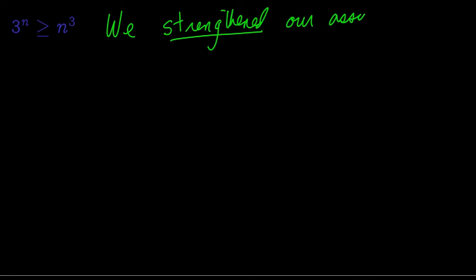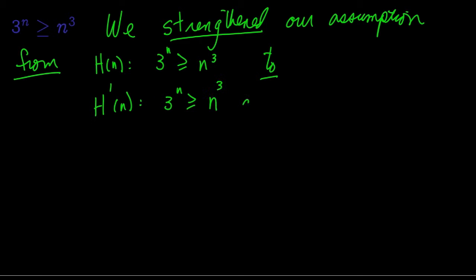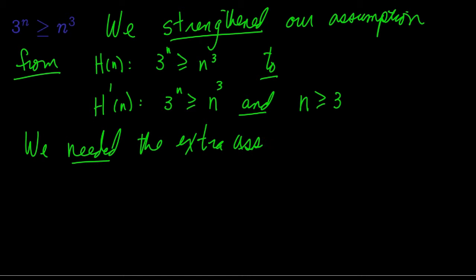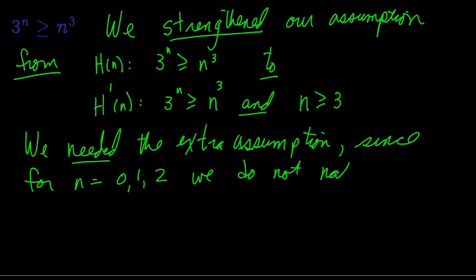When we strengthen our assumption, we went from our inductive hypothesis being 3 to the n greater than or equal to n cubed to that n is at least 3. We needed this extra bit of strength, since for the first few values of n, we don't have the important step to our argument that 3n cubed is at least n plus 1 cubed.